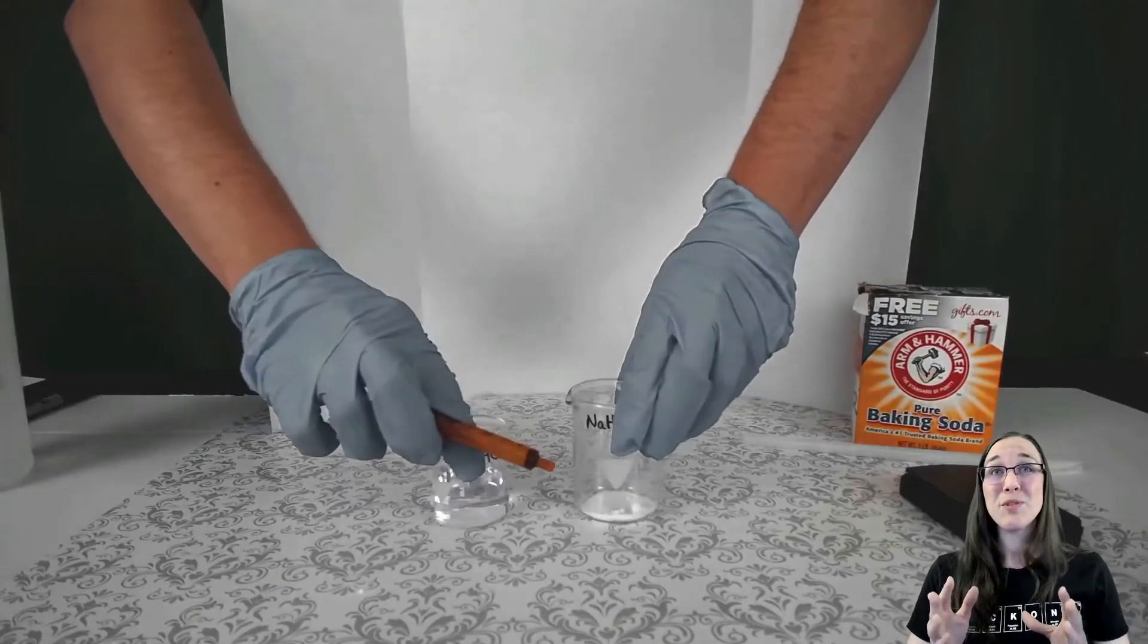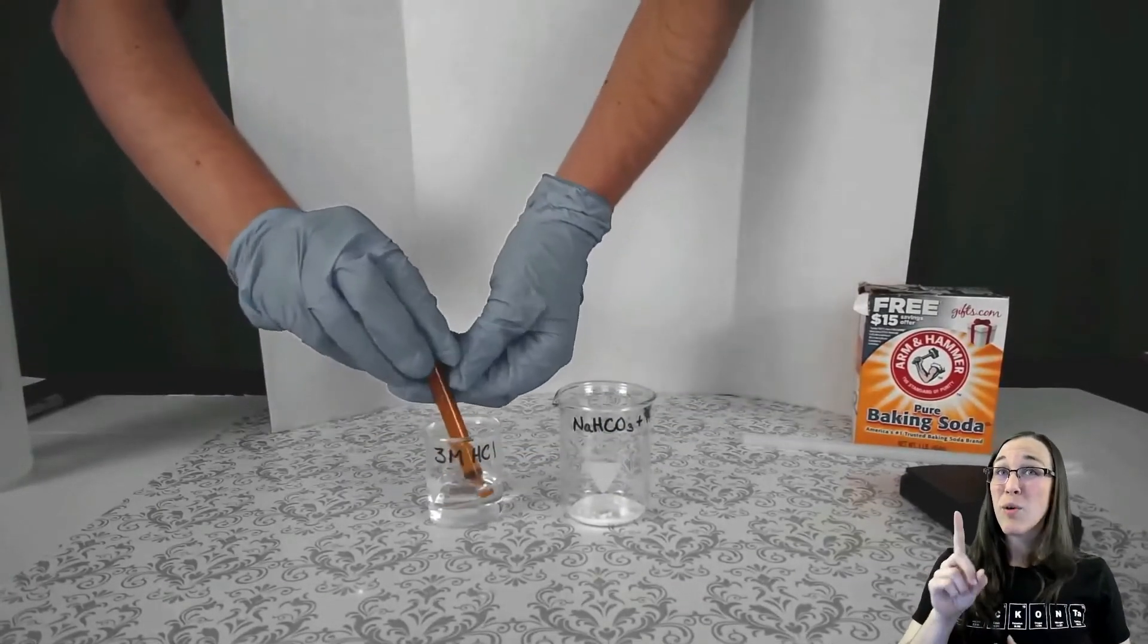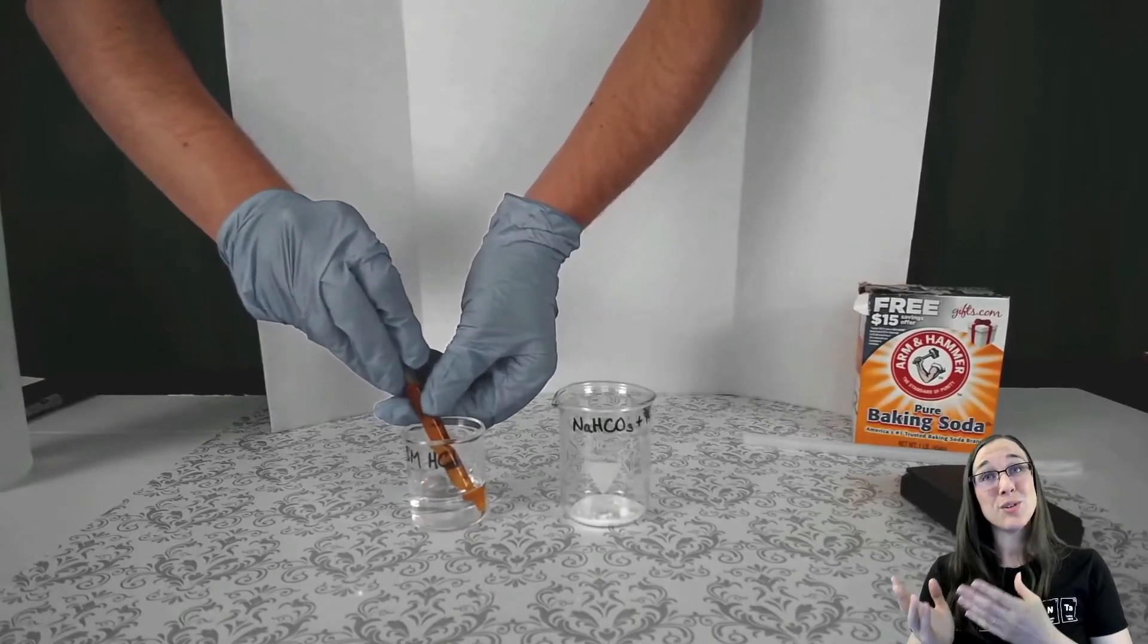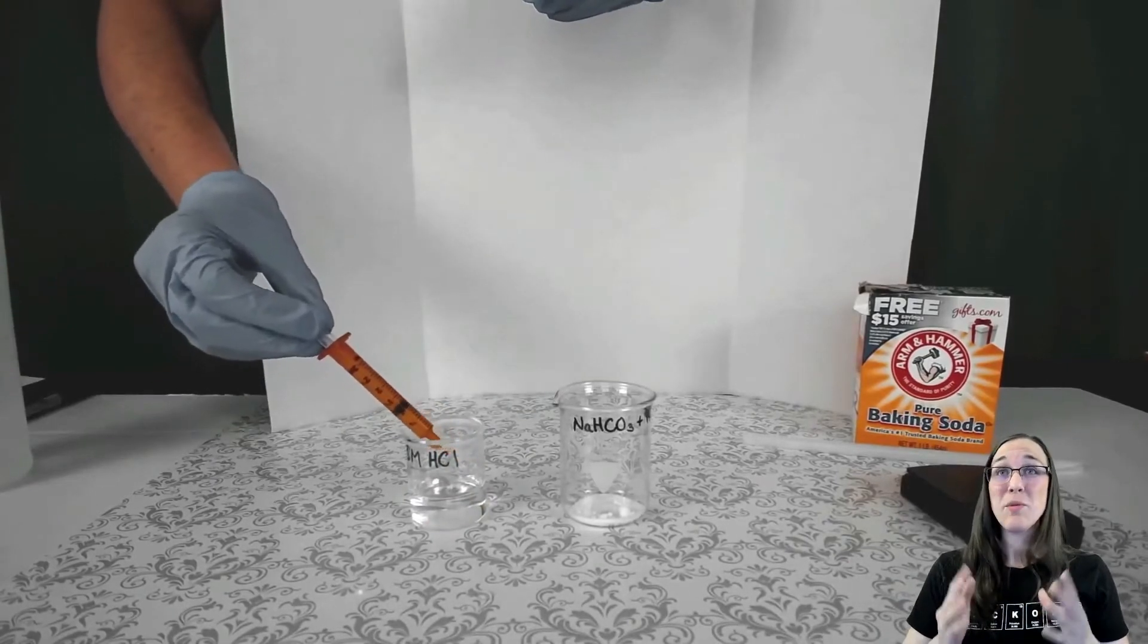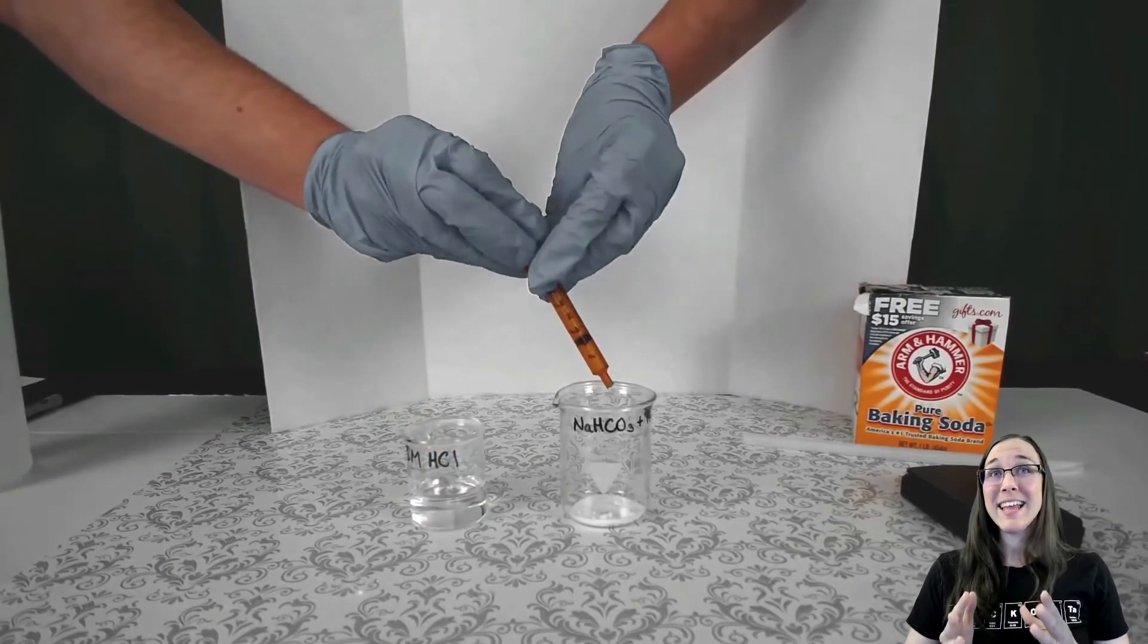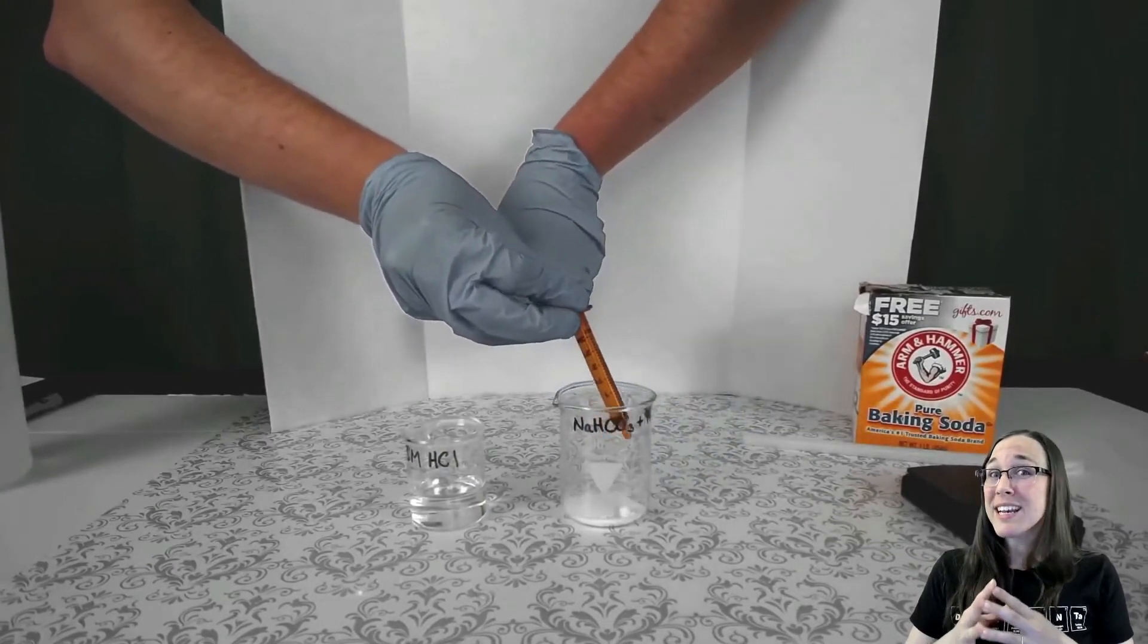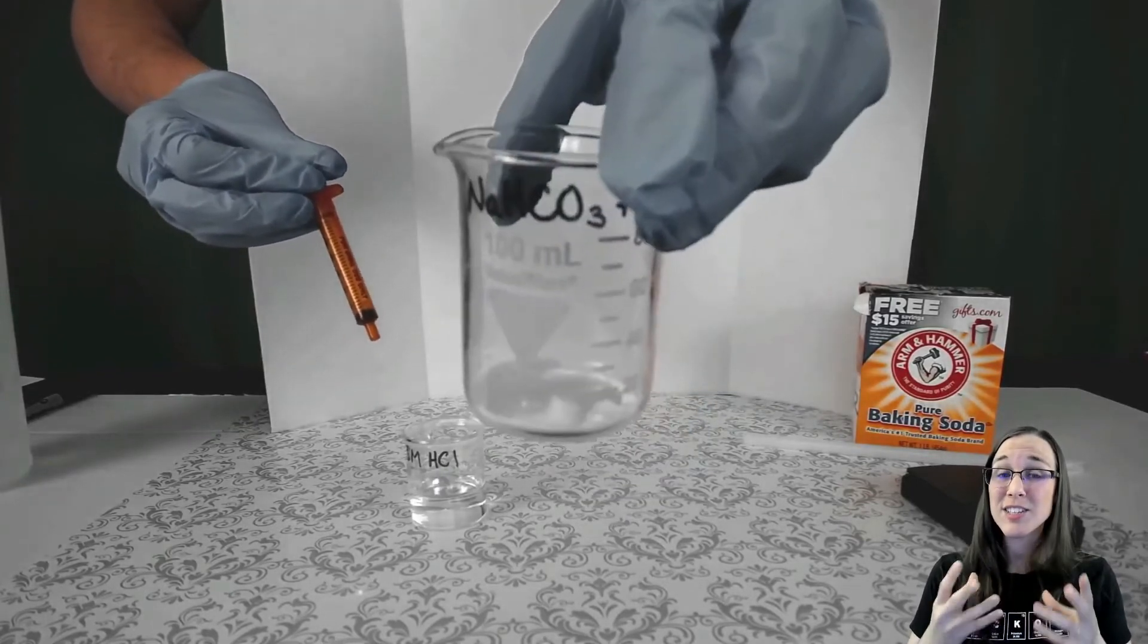So now we're actually moving on to the reaction part. We're going to add increments of 1 milliliter of the 3 molar hydrochloric acid to the 2 grams of baking soda that we've massed out. So we're just gonna pull up very carefully, 1 milliliter at a time, and add that to the baking soda. Now the overall goal here is to add only enough acid until the bubbling, the reaction, stops.